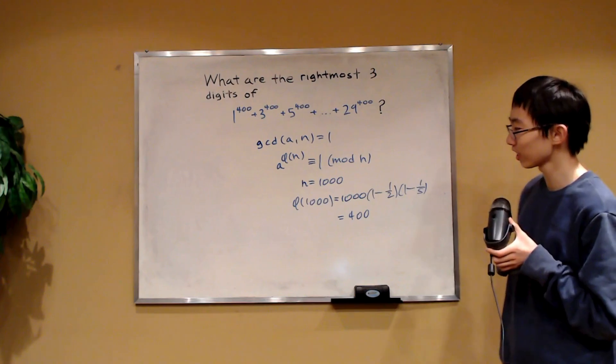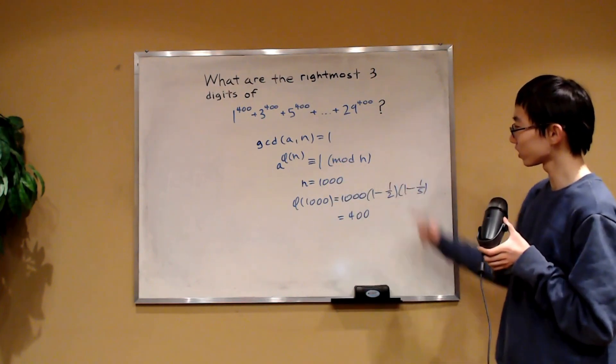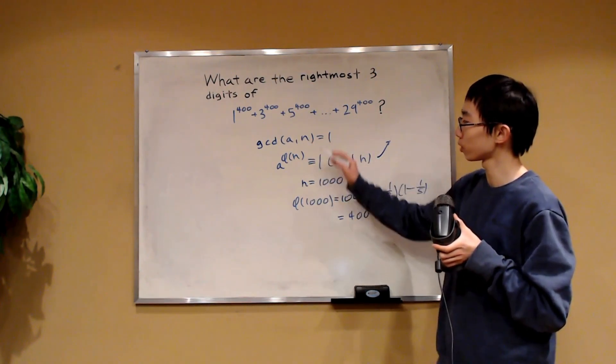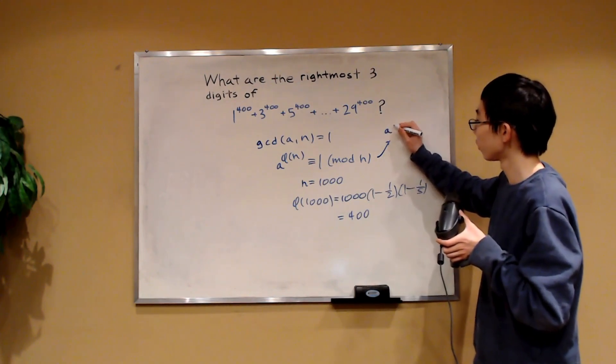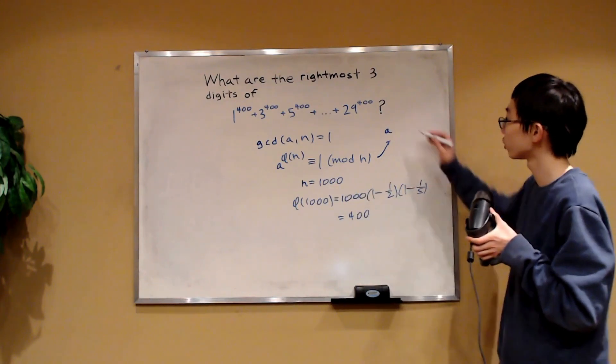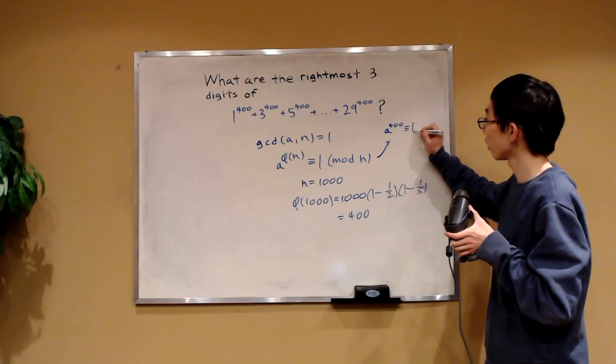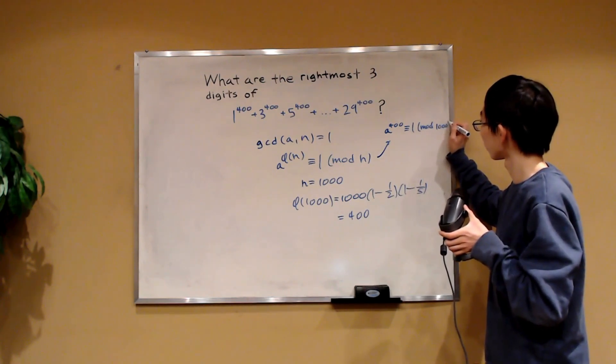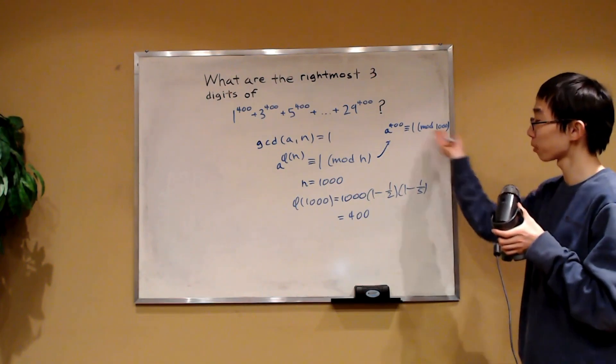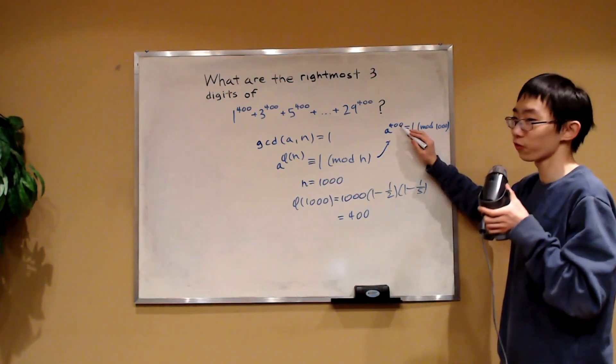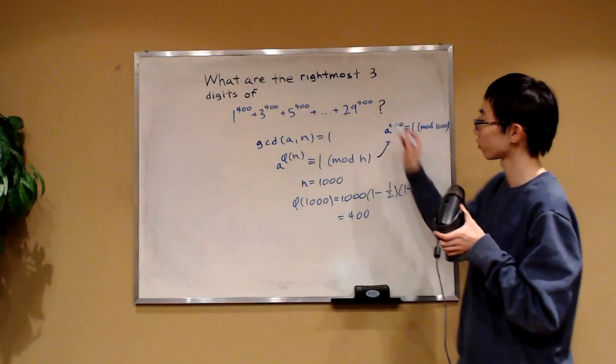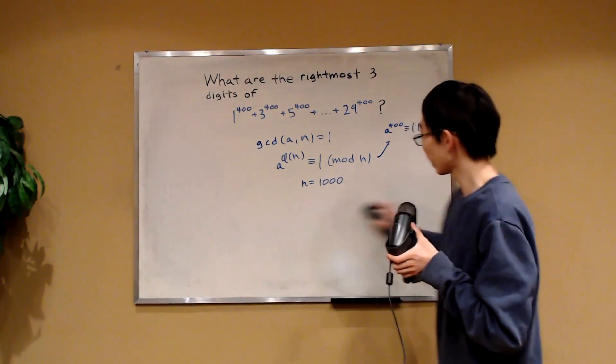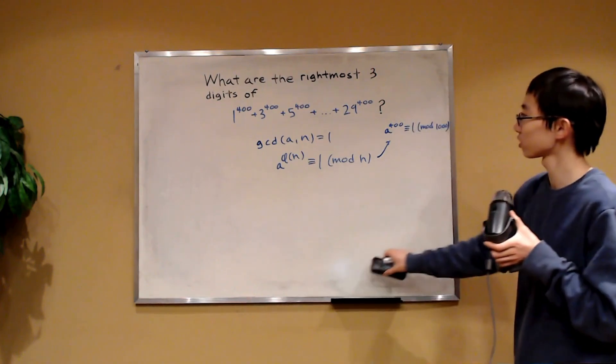If we were to take n to be 1,000, then Euler's theorem would tell us that if a is relatively prime to 1,000, then we have that a to the phi of 1,000 or 400, this is congruent to 1 mod n which is 1,000. Euler's theorem would give this and this is perfect because we have the 400th power.